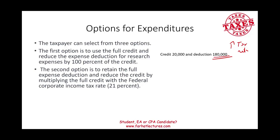The second option is to retain the full expense deduction of $200,000. In that case, you reduce the credit by 21% — assuming the corporate tax rate is 21% as of today. Therefore, the credit will be reduced by $20,000 multiplied by 21%, resulting in a credit of only $15,800.